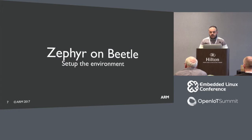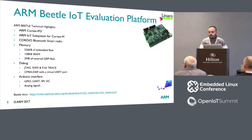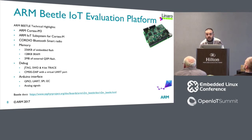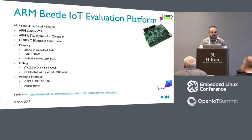Let's start from some basics, like the setup of the environment. Before setting up the environment, we need to know what our board is and what we are compiling for. In our case, we are using a Beetle board. The Beetle board is Cortex-M3-based — it's an enhanced IoT evaluation platform that includes the IoT subsystem for Cortex-M and the Cordio BLE smart radio. It has 256 kilobytes of flash, 128 kilobytes of RAM, and an external flash of 2 megabytes. It offers some debug interfaces and is compliant with Arduino shields.